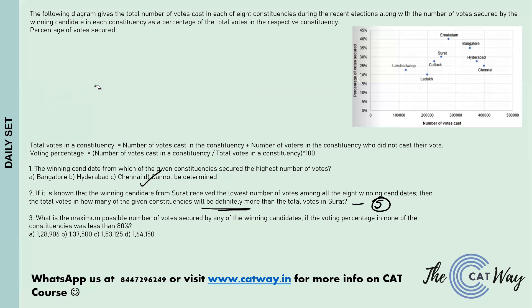Observing Lakshadweep, Ladakh, Katak, and Surat — they have a lower percentage of votes secured and also fewer votes cast than Bangalore. So these four places can never have the maximum possible number of votes secured by the winning candidate. We are left with Bangalore, Ernakulam, Hyderabad, and Chennai.